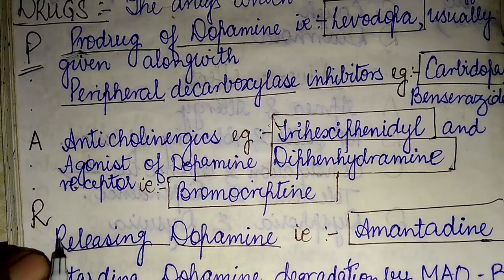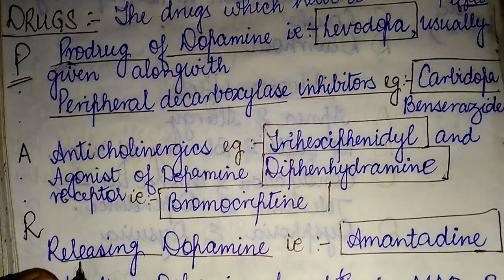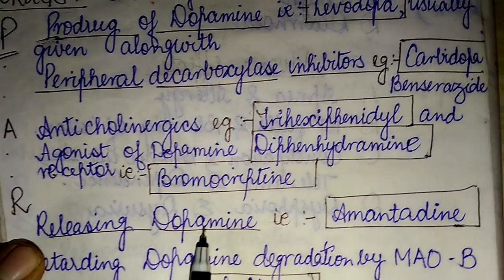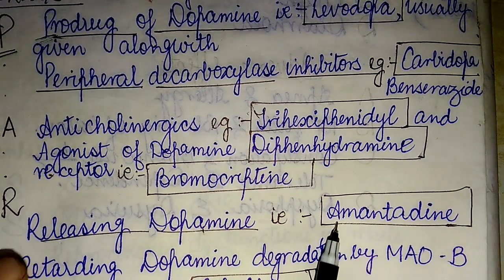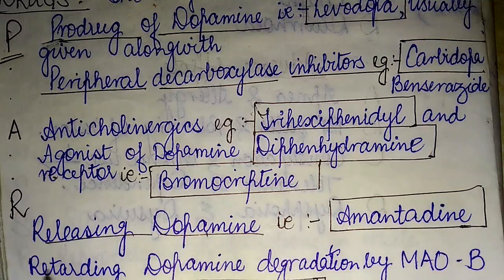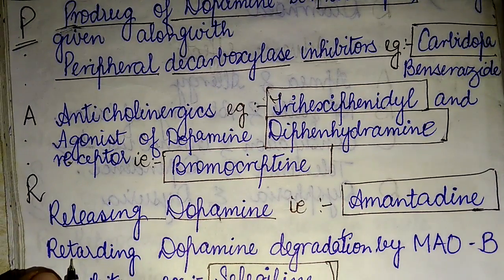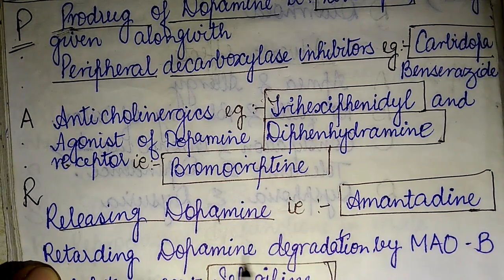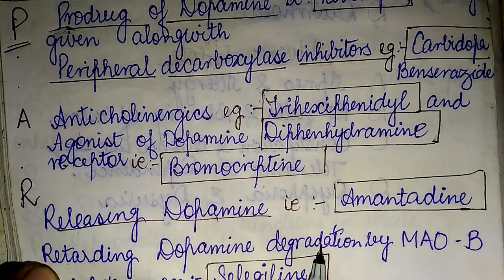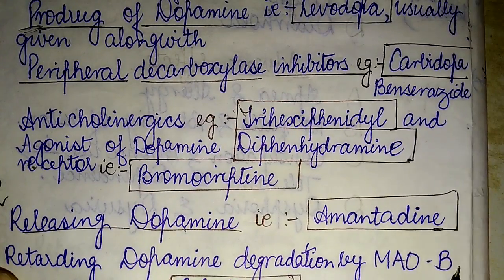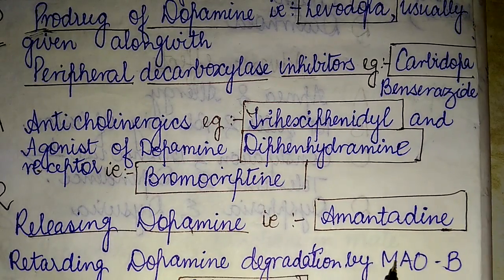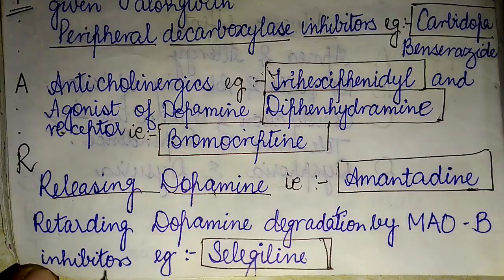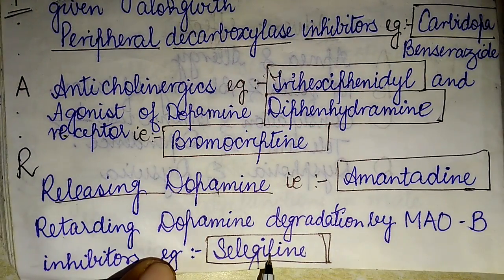R — this class of drugs comprises those which release dopamine. The famous example is amantadine. Another sub-category involves retarding dopamine degradation by MAO-B inhibitors — that is monoamine oxidase B inhibitors — with selegiline as the example.